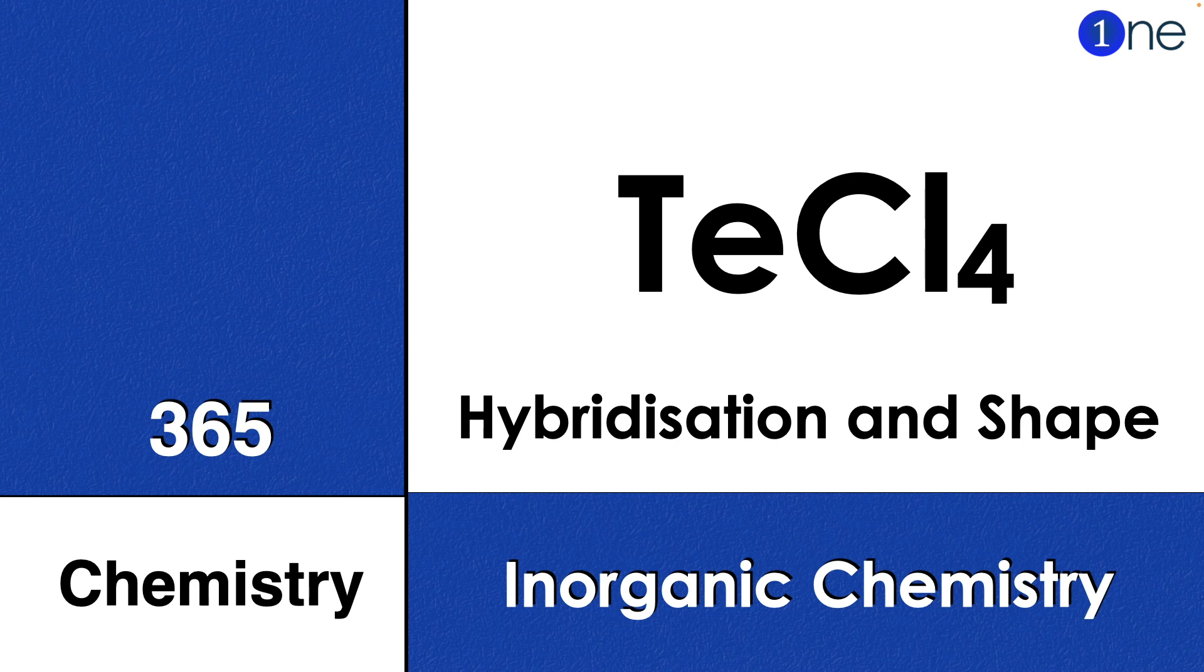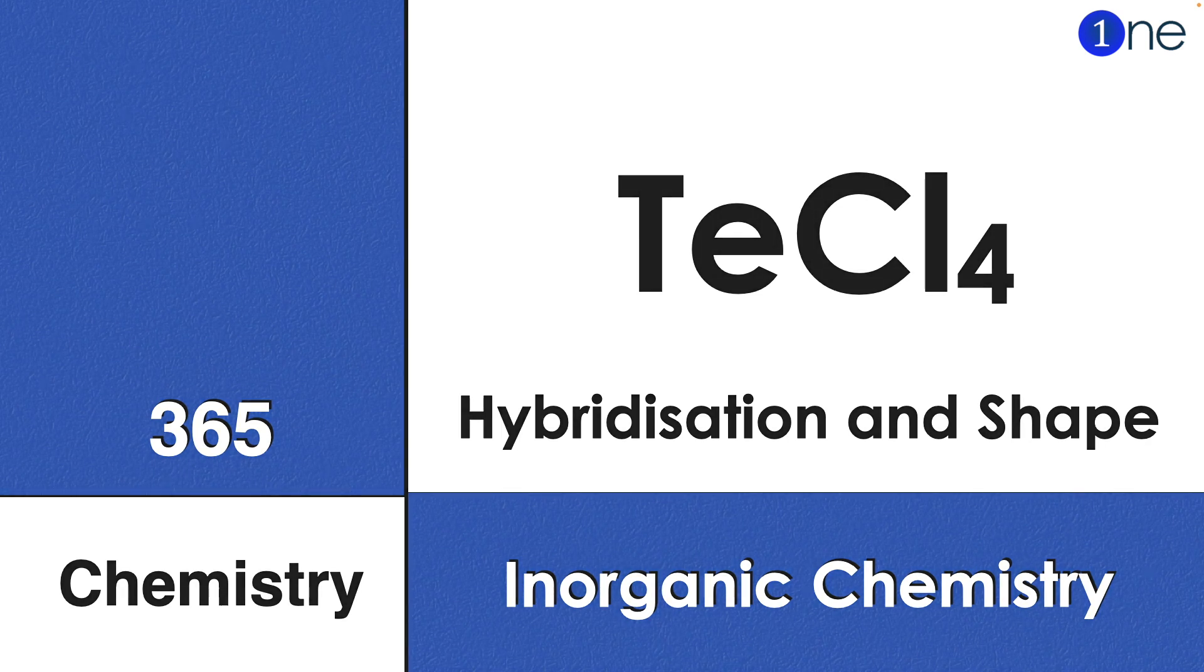Welcome to One Chemistry. This is the 365 Chemistry series on inorganic chemistry questions. Here you have tellurium tetrachloride (TeCl4), and you have to find the hybridization and shape of it.